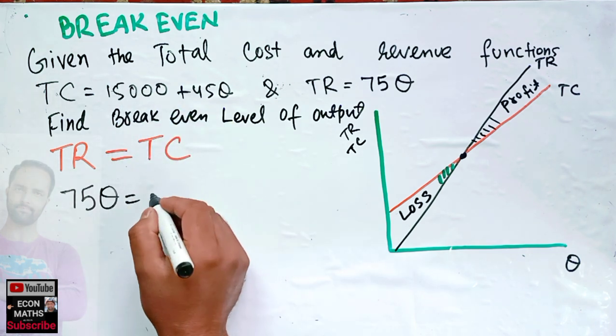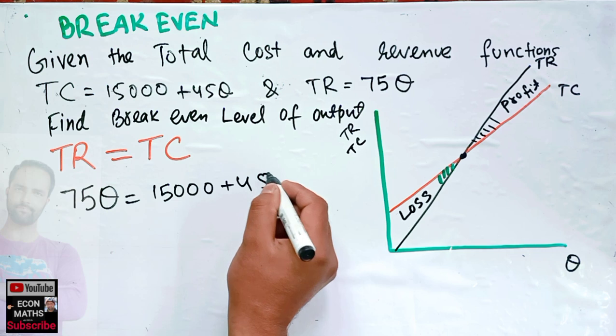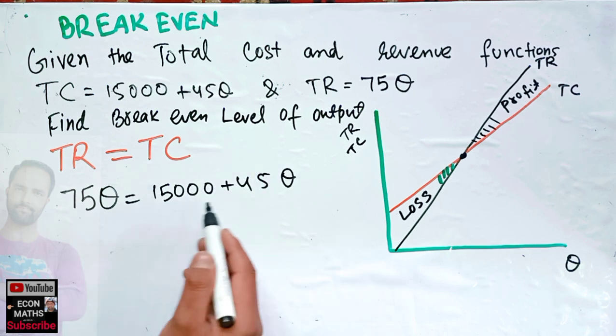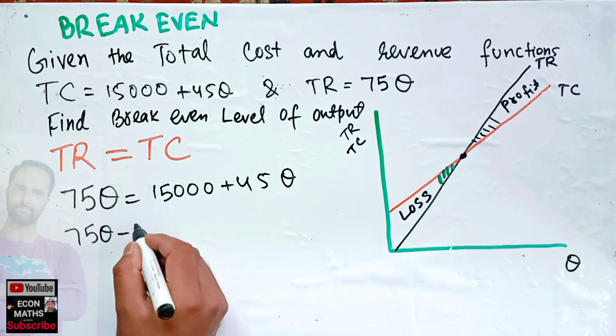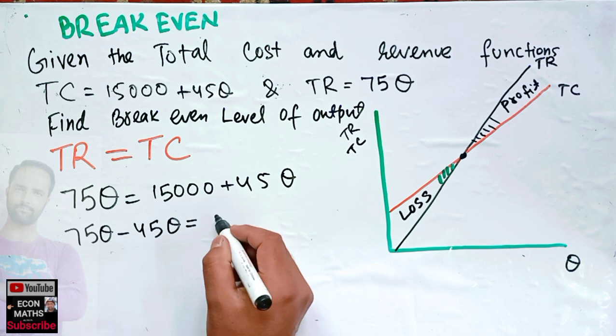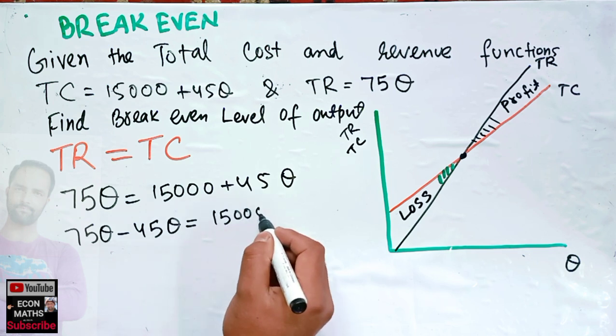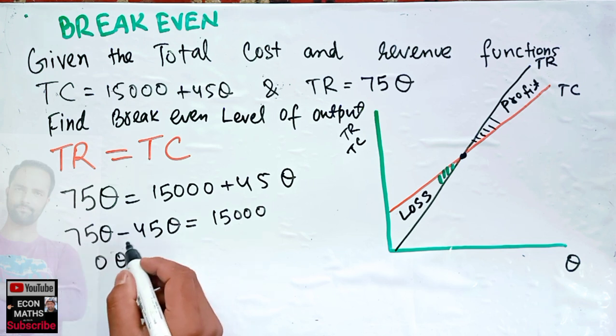is our total cost, 15,000 + 45Q. Transposing, we have 75Q - 45Q = 15,000. These are the same terms we can subtract. 75 minus 45 is 30, so 30Q = 15,000.